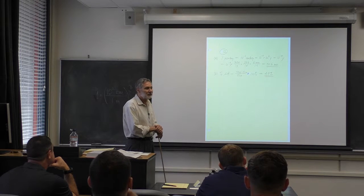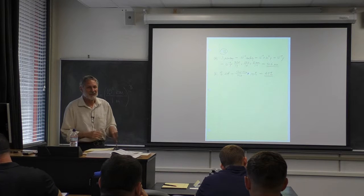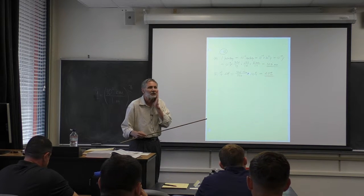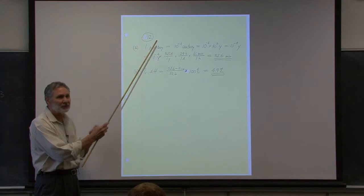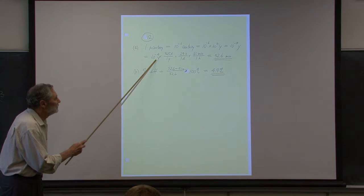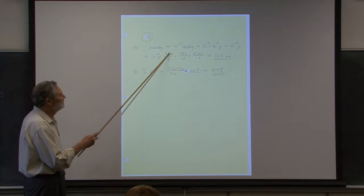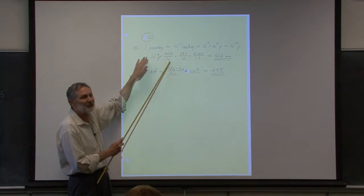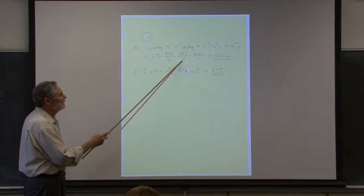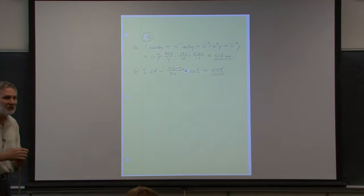We do this by hand using unit conversion — your calculator probably can't handle this one. Starting with 10⁻⁴ years: there are 365 days per year, 24 hours per day, and 60 minutes per hour. Multiplying this all out, we get approximately 52.6 minutes.